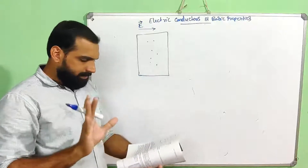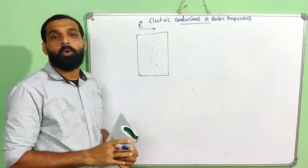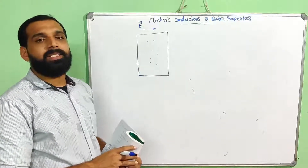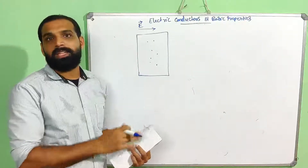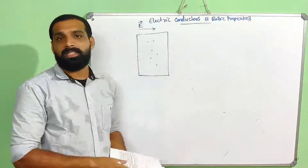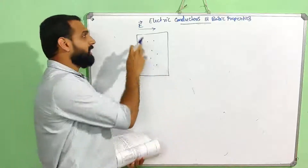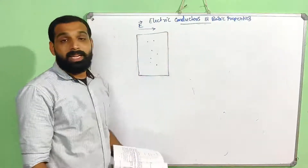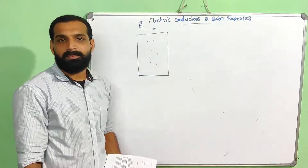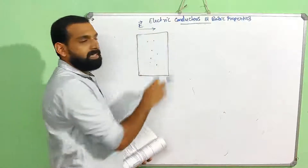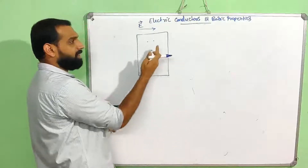The charge particles will respond to the electric field. Electric field lines are directed from positive to negative. When we apply an electric field, positive charge moves in the same direction as the field, and negative charge moves in the opposite direction.